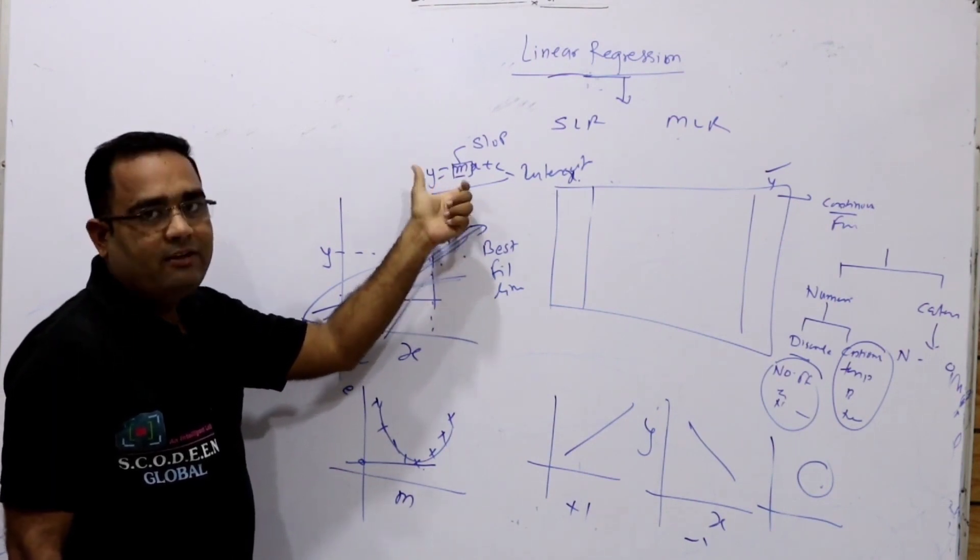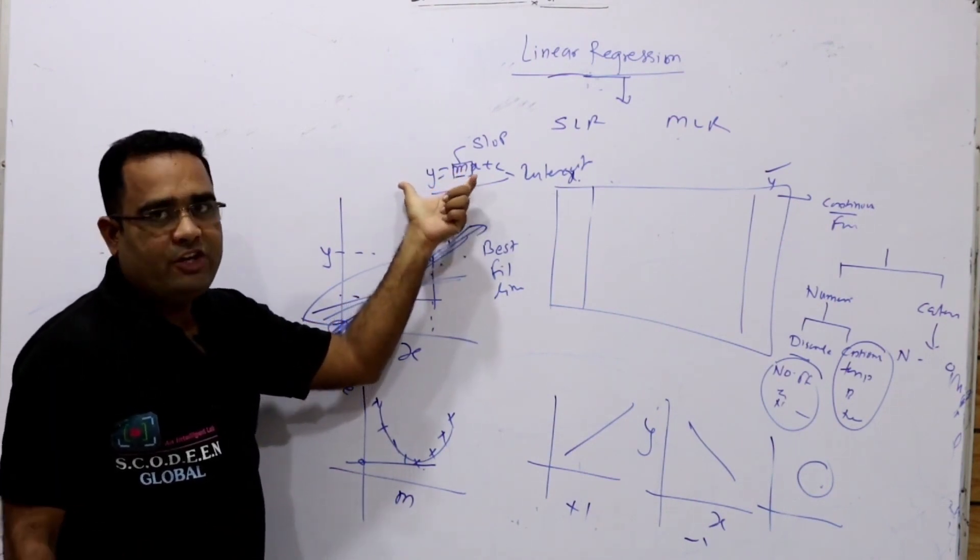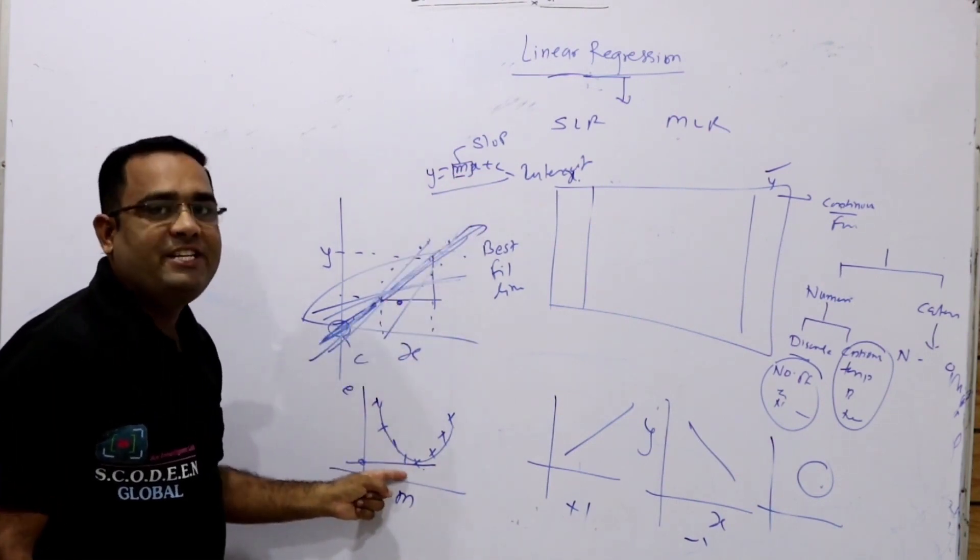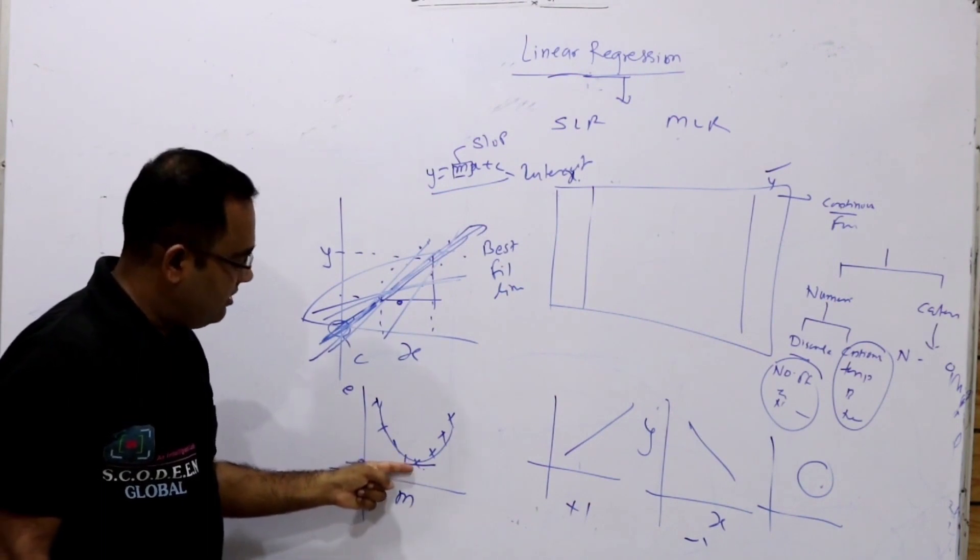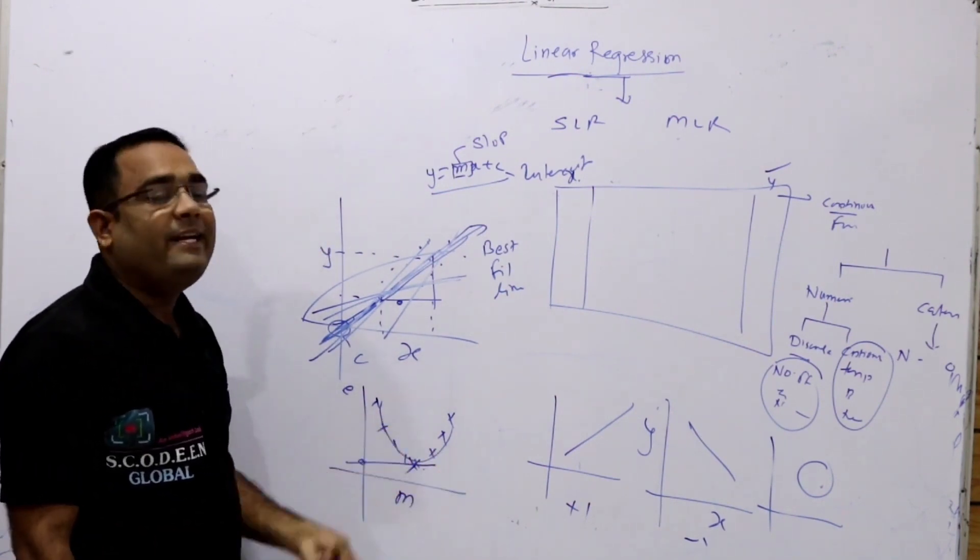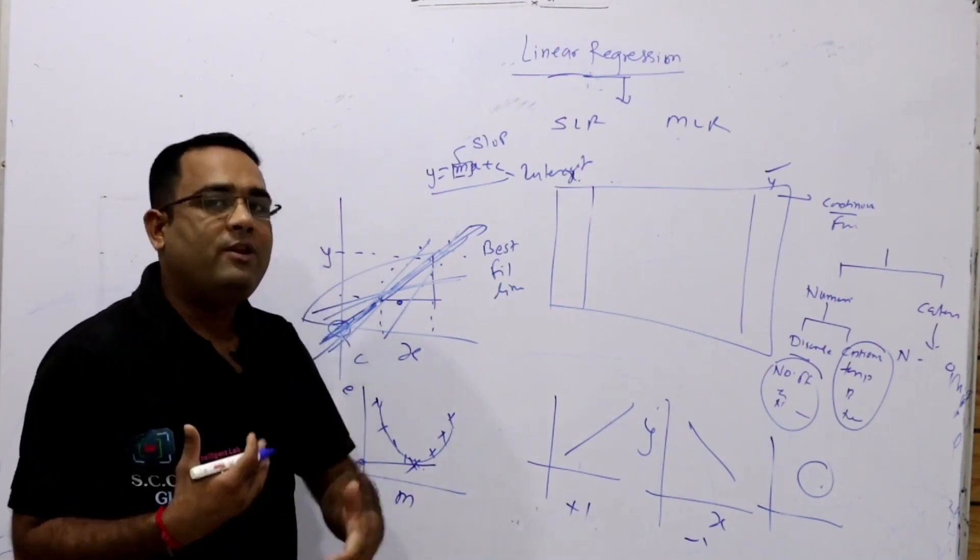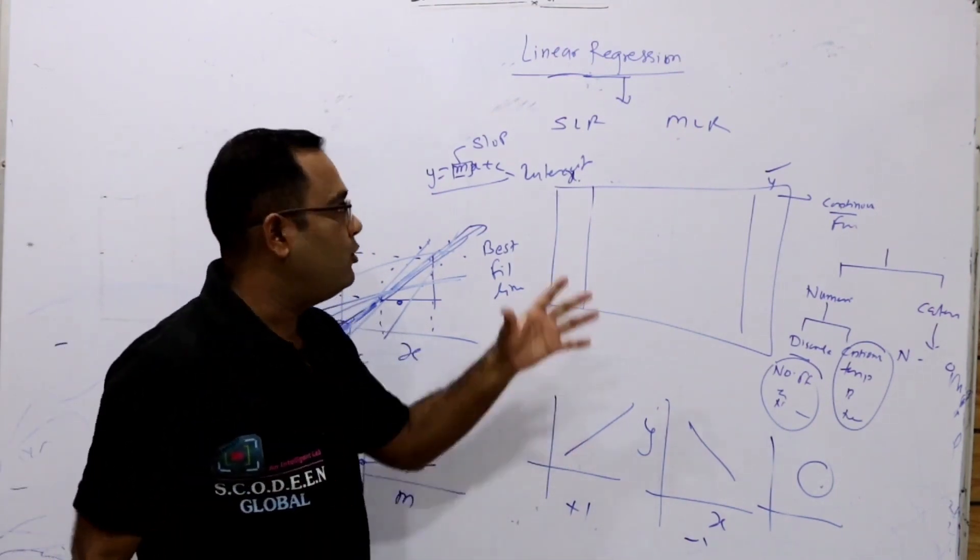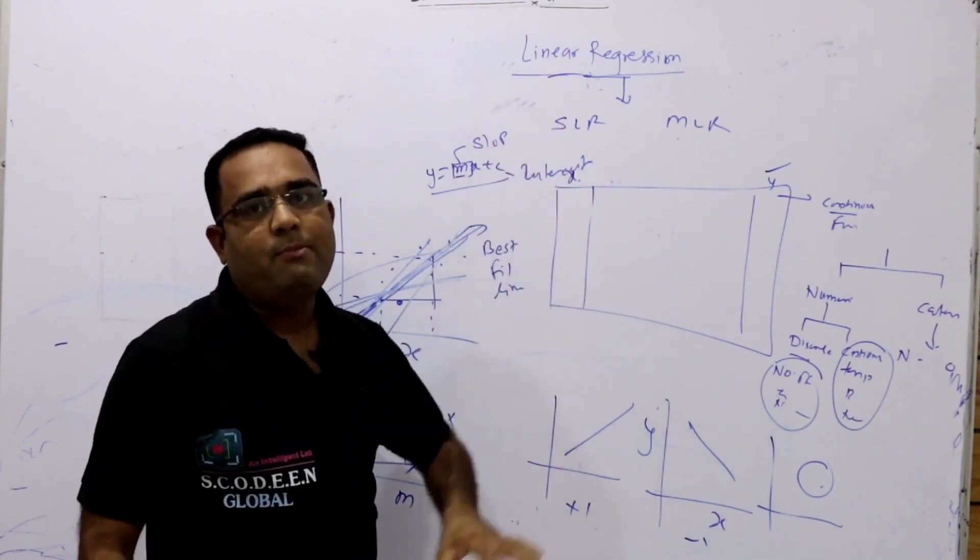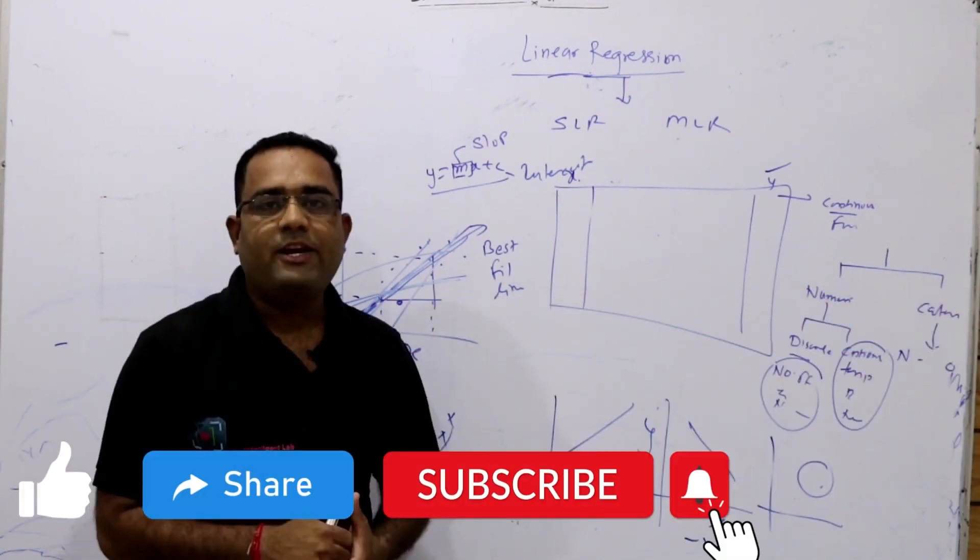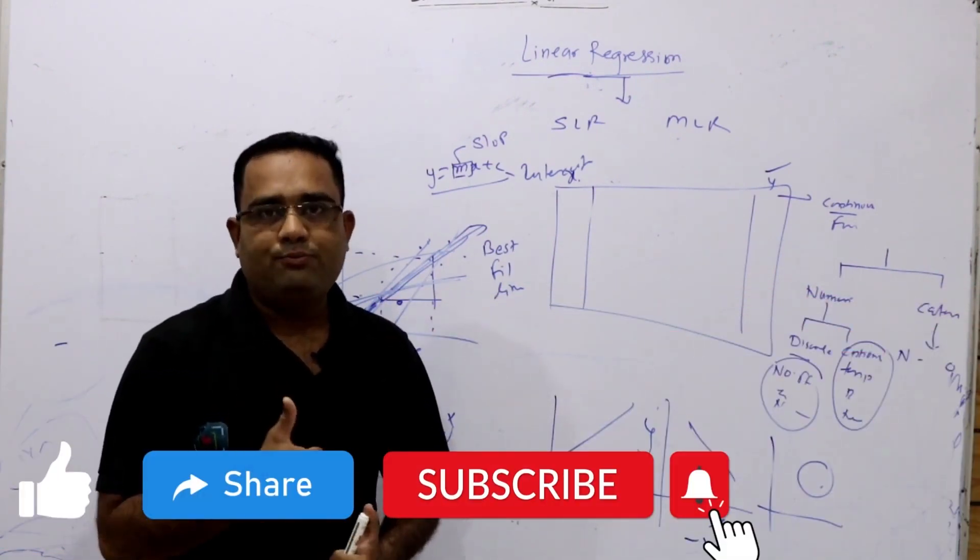So, this is a brief idea about the linear regression. So, here, we need to find this global minimum. By mathematically, how we can find the global minimum, we will see in the next video. We will see in depth about the linear regression with the mathematics. So, thank you very much for watching this video. Like, share, subscribe. Thank you.